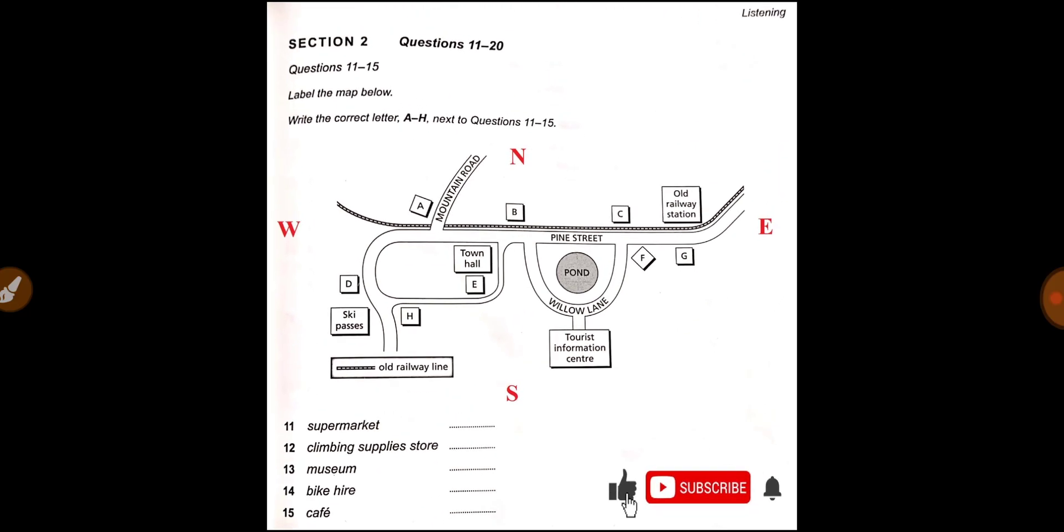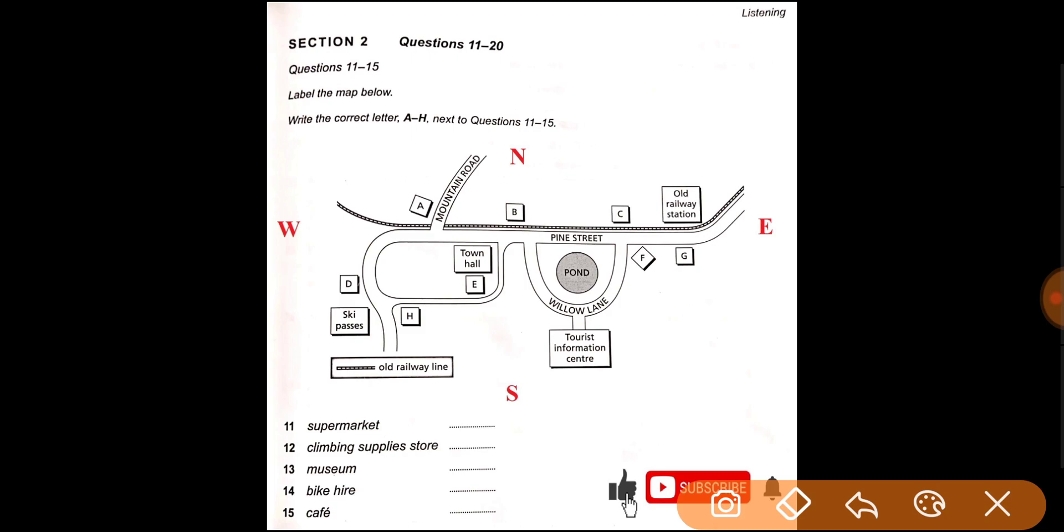So first of all, tourist place center, Willow Lane, and the second building you come to the right. So this means that your supermarket will be G part, because on the right side, first part is F and second part is G, so answer of first question will be G. Next, let's listen.